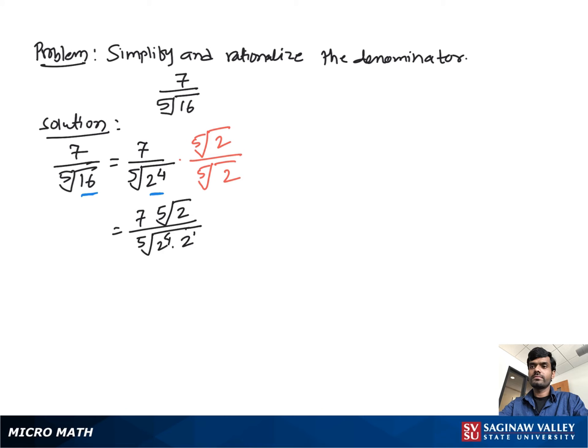Then we have 7 times 5th root of 2 over 5th root of 2 to the 5th.